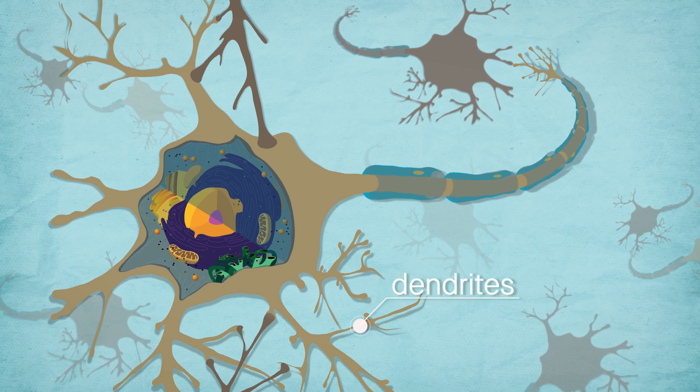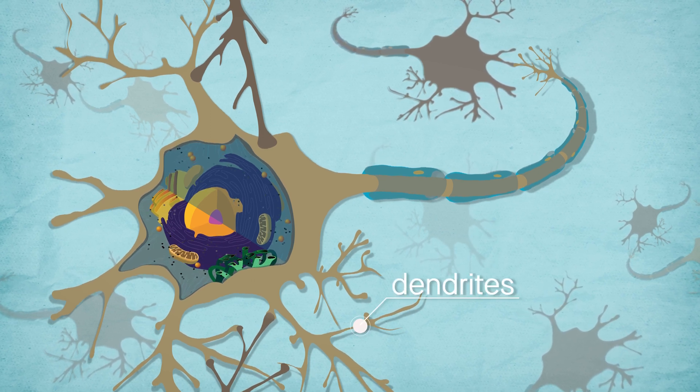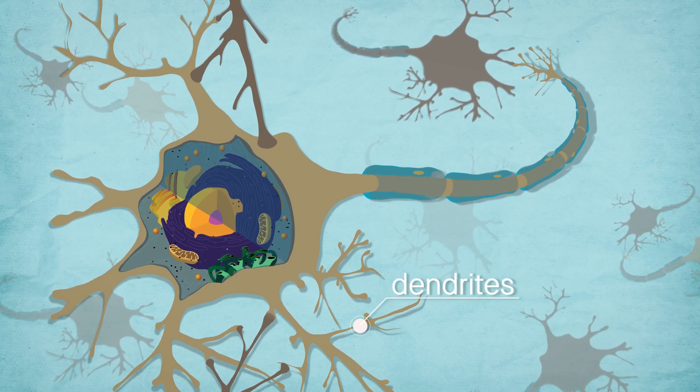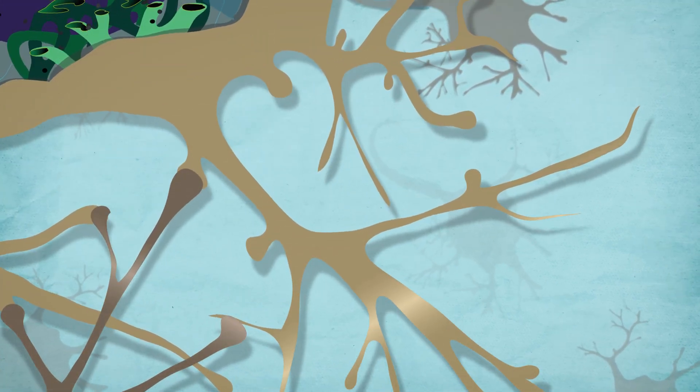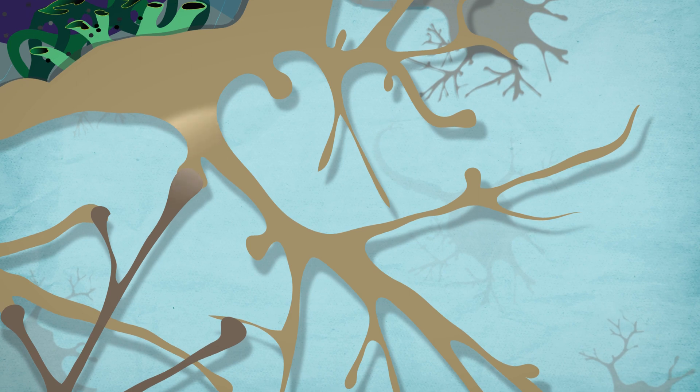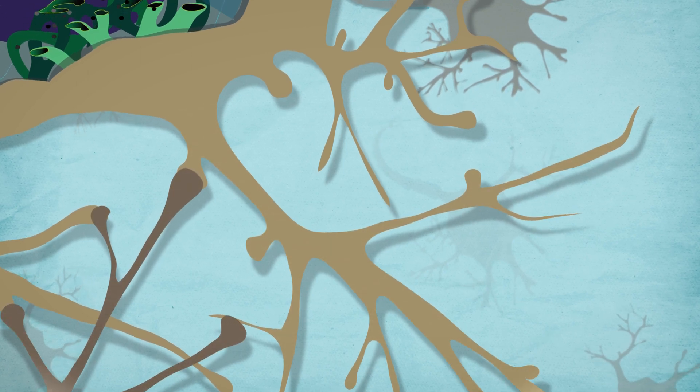One area of study is dendrites, which are the tree-like structures of neurons that receive electrical impulses. Researchers are carefully mapping out brain circuits and uncovering how connectivity changes can result in defects of the visual system or behavioral problems.